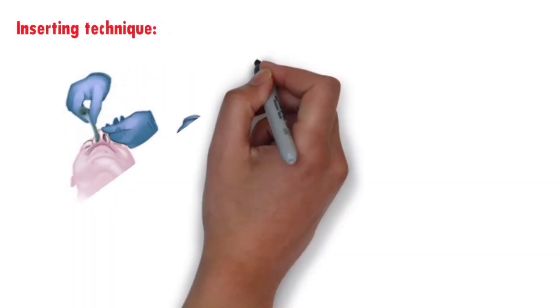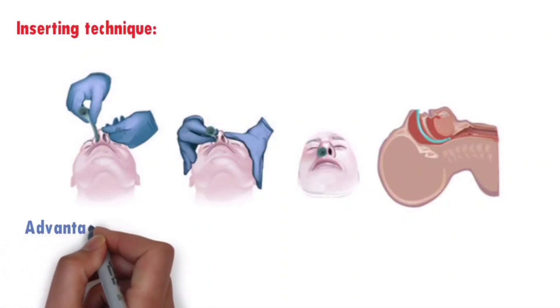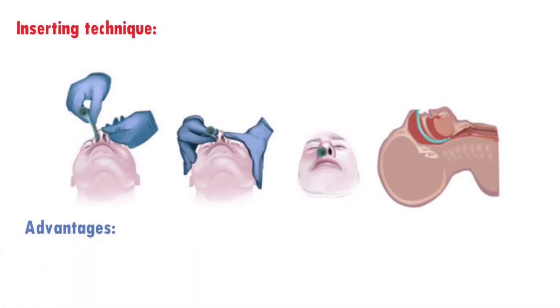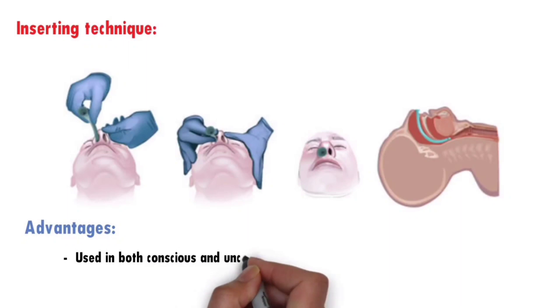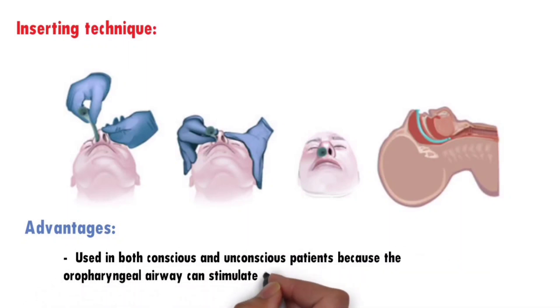Inserting technique: choose an unobstructed nostril, lubricate with lignocaine jelly, and advance at an angle perpendicular to the face. Advantages: the nasopharyngeal airway has some advantages over an oropharyngeal airway — most notably, it can be used in both conscious and unconscious patients, because the oropharyngeal airway can stimulate the gag reflex.